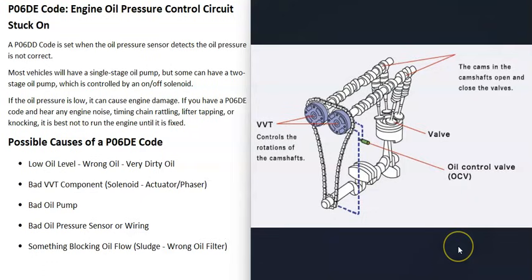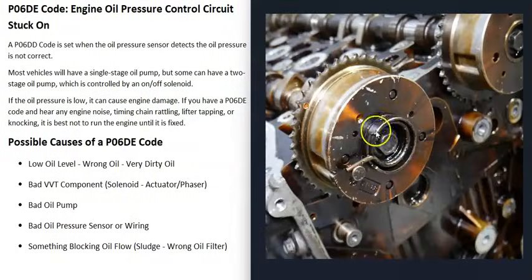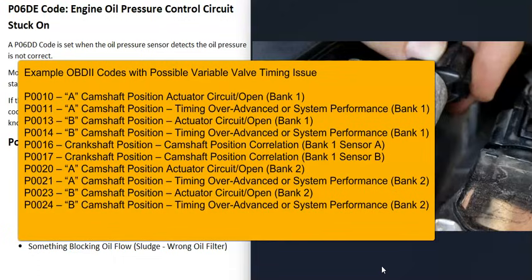The next possible cause involves variable valve timing components. Not all vehicles have variable valve timing, but most newer vehicles will. This includes things like a bad VVT solenoid, actuator, or phaser. Engine oil flows through all these VVT components, and the computer adjusts timing by controlling oil pressure through them. The most common failure is a bad solenoid, and you'll usually get additional codes pointing to that specific component.